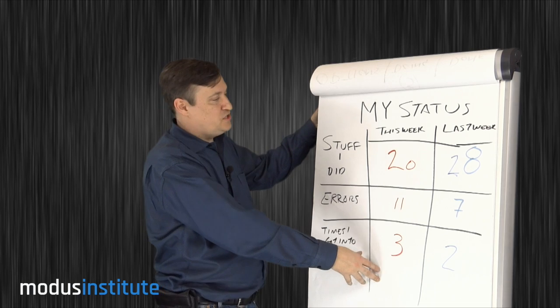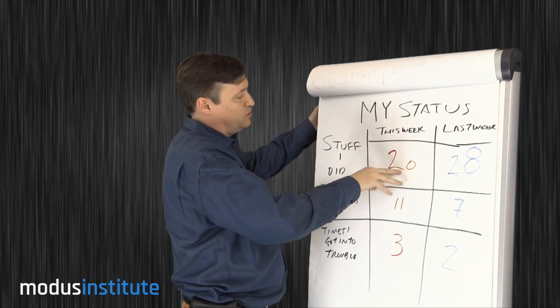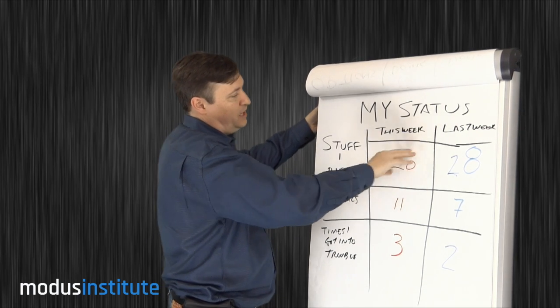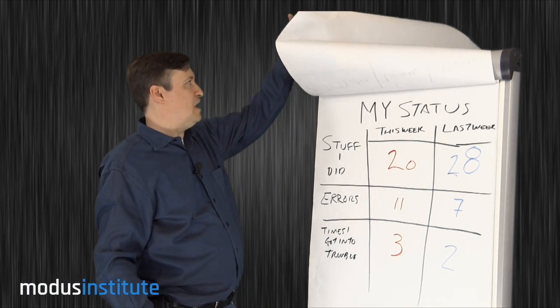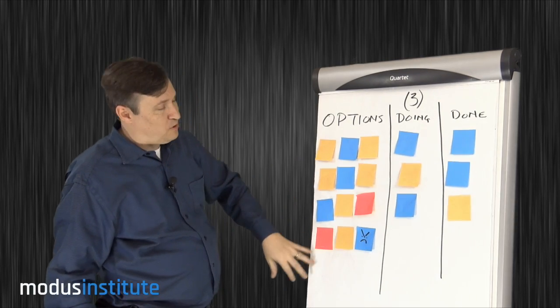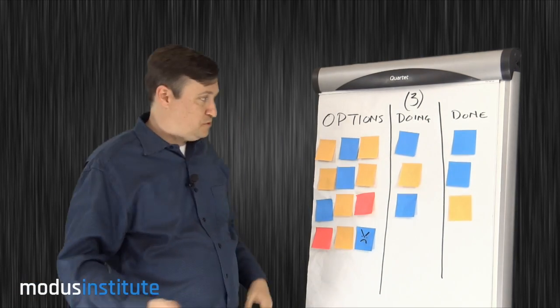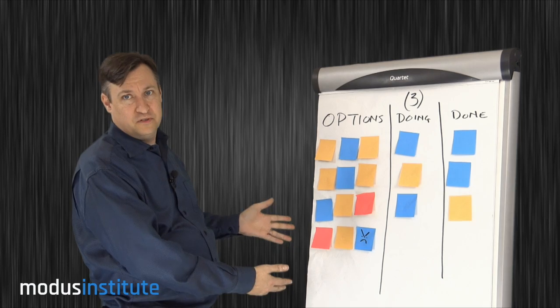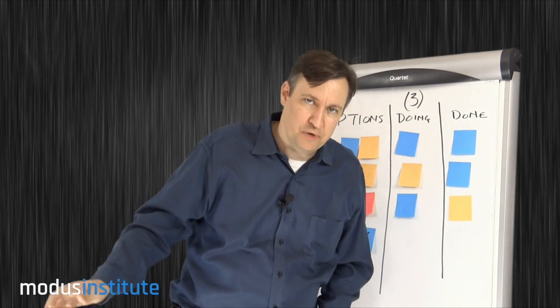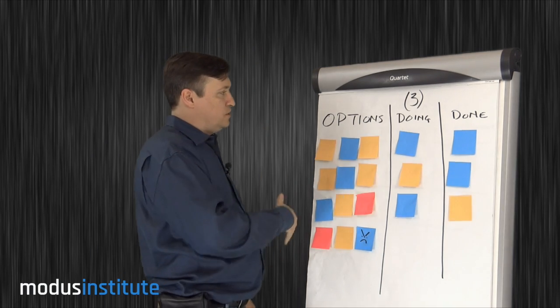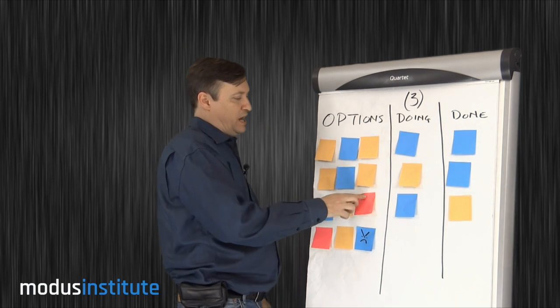What we don't know from this is the natural variation. Maybe stuff I did goes from 20 to 50 normally, and this is on the low end but by no means outside the realm of reason. So what we'd like to do instead is maybe still collect those numbers—those numbers might not be bad things—but we want those numbers to have some context.